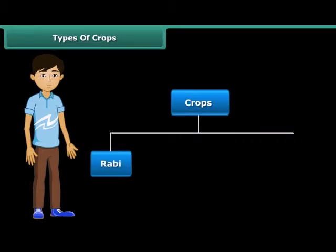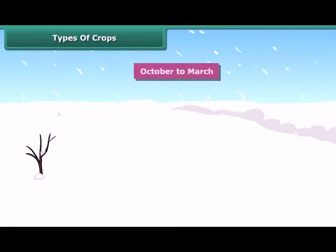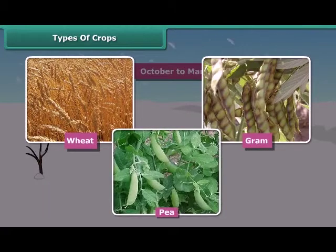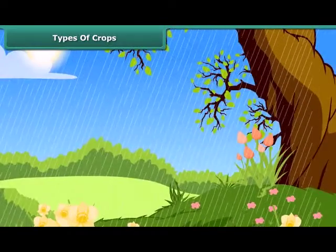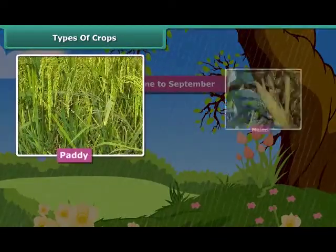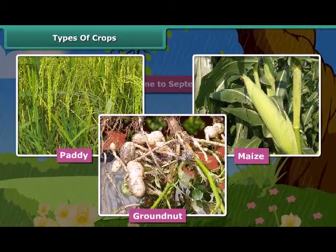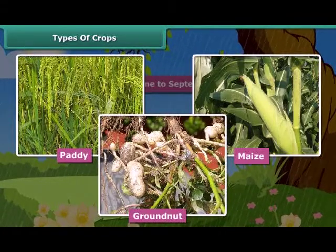These are Rabi crops and Kharif crops. Rabi crops are usually grown in the winter season from October to March. Wheat, gram, and peas are examples of Rabi crops. Kharif crops are usually sown in the rainy season, generally from June to September. Paddy, maize, groundnut, etc. are some common examples of Kharif crops. To grow crops, various activities are performed, which are known as agricultural practices.